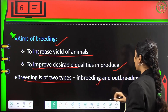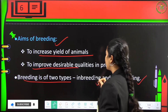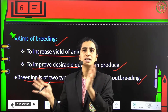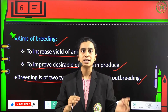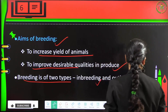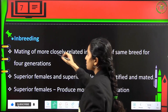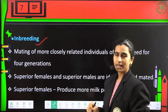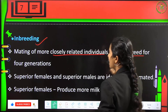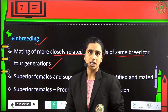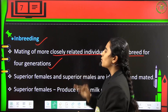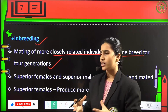Breeding is of two types: inbreeding and outbreeding. Inbreeding is mating within the same species, while outbreeding is mating between different species. Inbreeding is the mating of closely related individuals of the same breed for four generations.